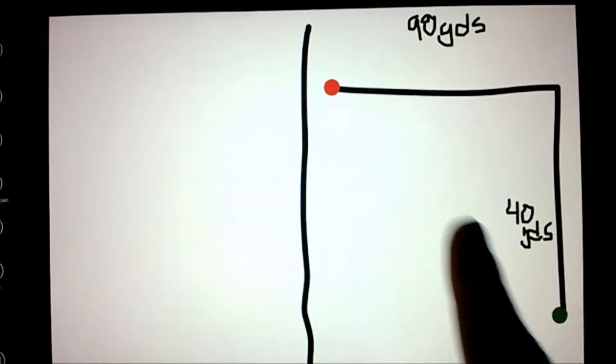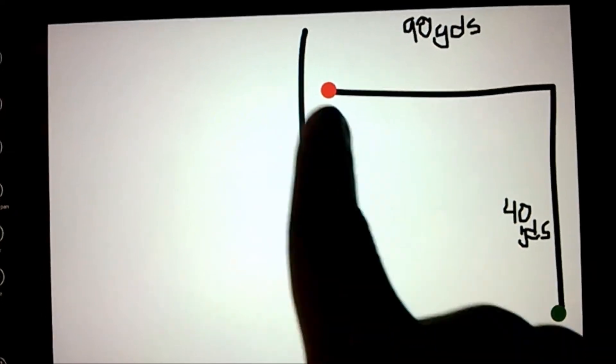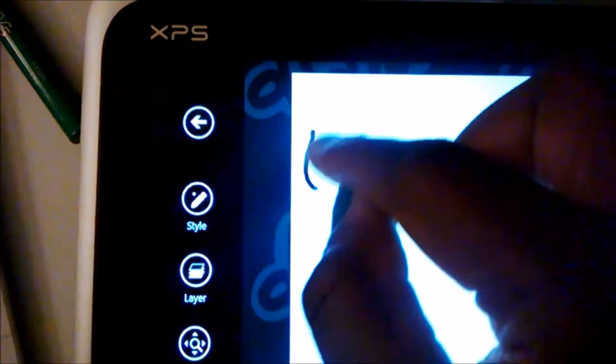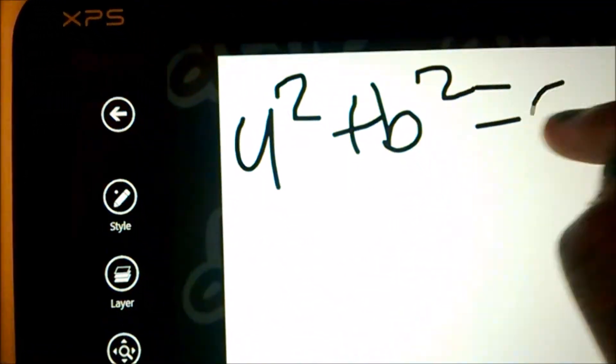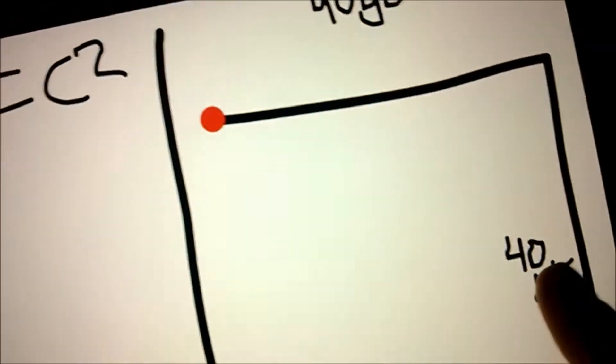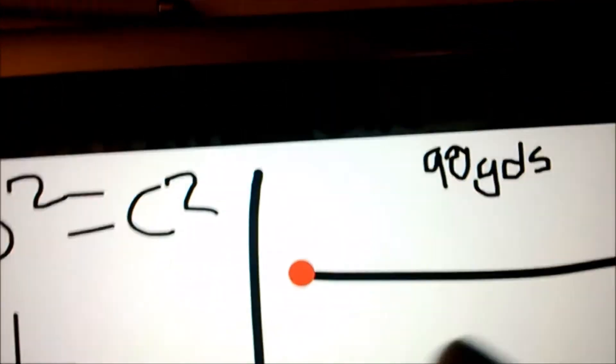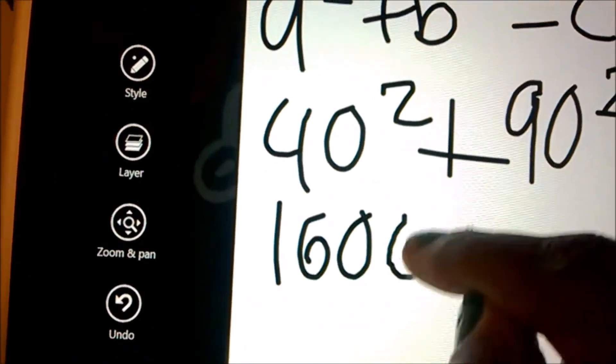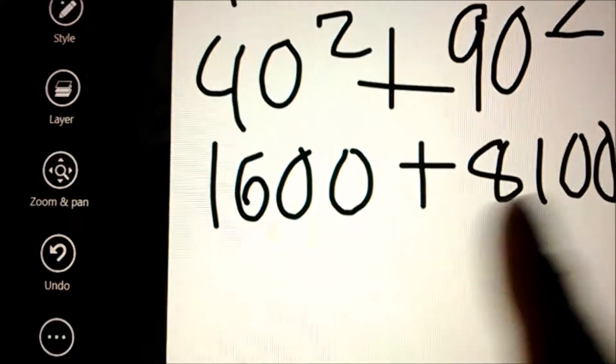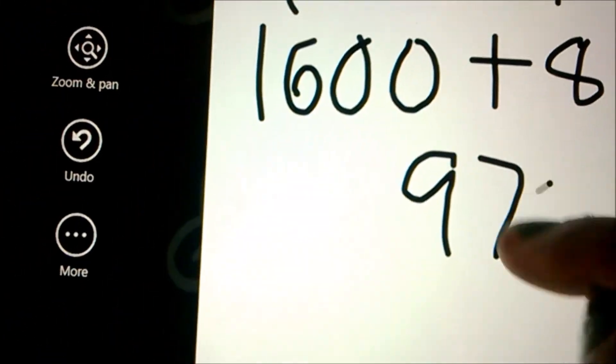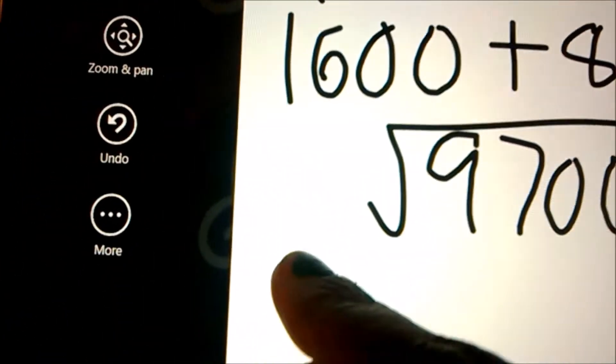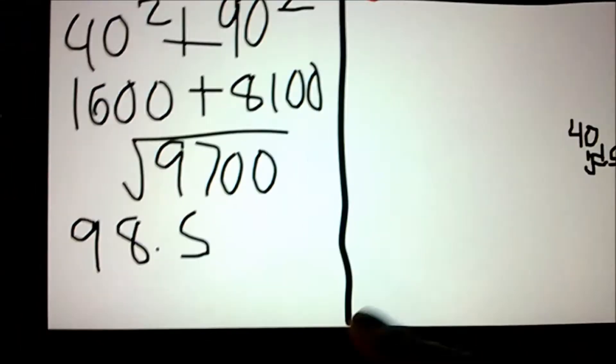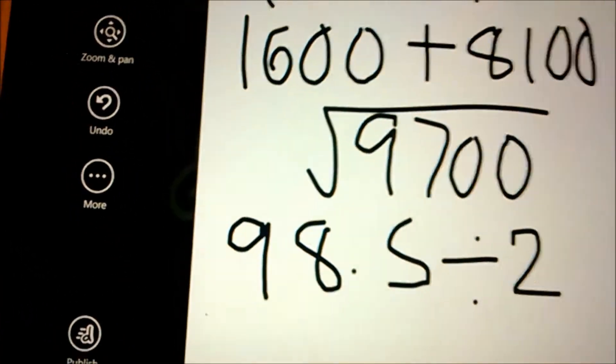The first way that Blossom took was from here to here. So we need to find the distance of this so we can get the time it took her to get from here to here. So we will use the Pythagorean theorem. So A squared plus B squared equals C squared. A is 40, so 40 squared, and B is 90, so 90 squared. 40 squared is 1,600 plus 8,100. Both of these together is 9,700. And the square root of that is 98.5. And since we need to get the time it took, we divide that by 2. And that is 49.3.